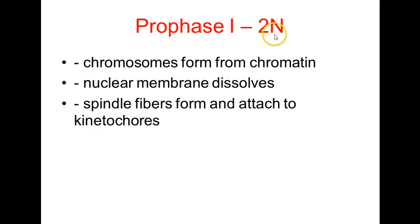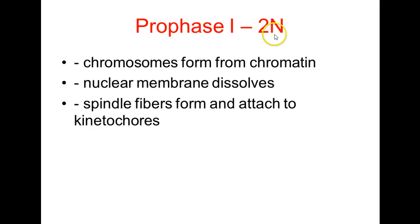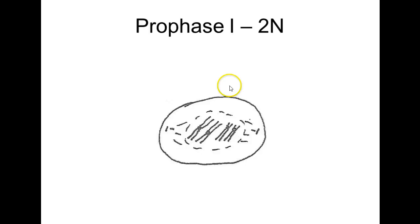In prophase I, the cell is diploid. Chromosomes form from the chromatin, the nuclear membrane dissolves, spindle fibers form and attach to the kinetochores. You can see the remnants of the nuclear envelope indicated by the dashed line. Chromosomes have formed and they group together as homologous pairs — those two form a homologous pair, and those two form another homologous pair.